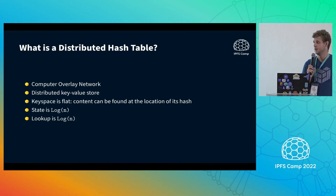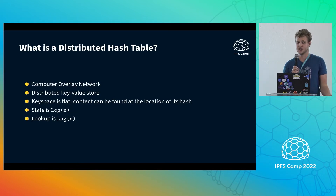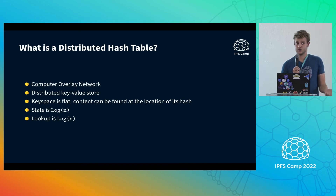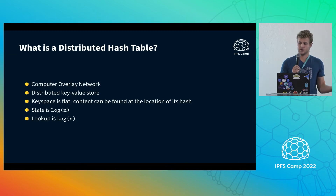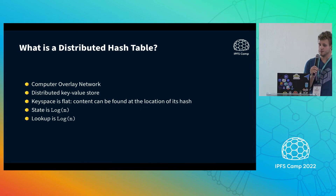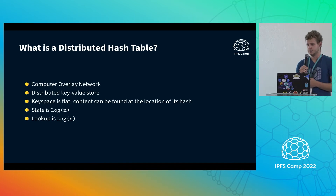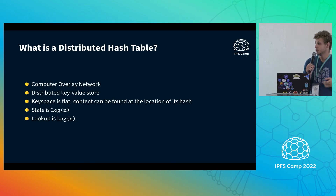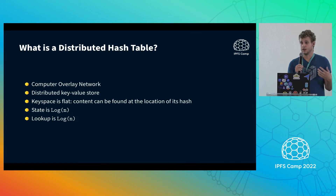Let me give you a quick introduction of what is DHT — a distributed hash table. It is basically a computer overlay network, which means that nodes are connected to the same network using the internet, and the overlay network with nodes participating in this DHT will be connected to each other on top of the internet. The abstraction that the DHT gives us is a distributed key-value store where you can find the location of some content according to the content itself.